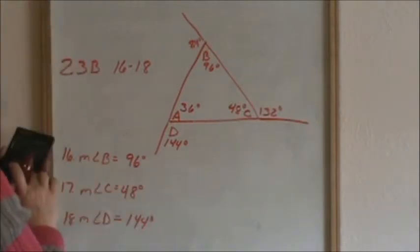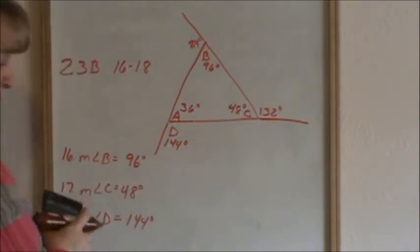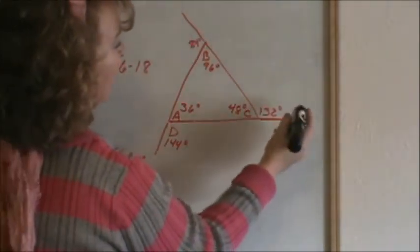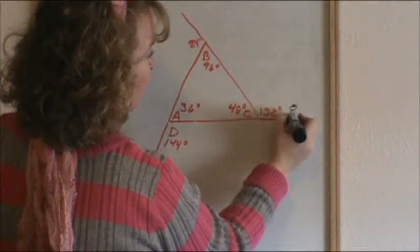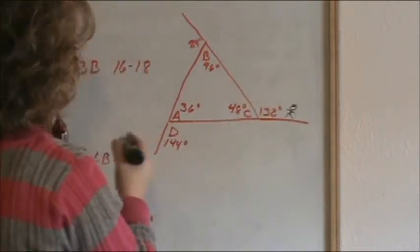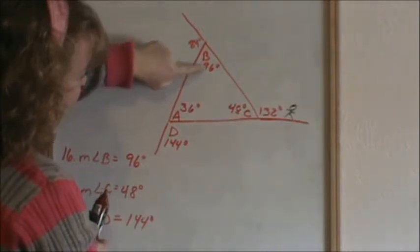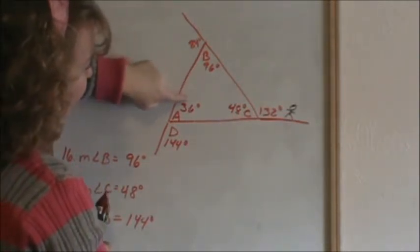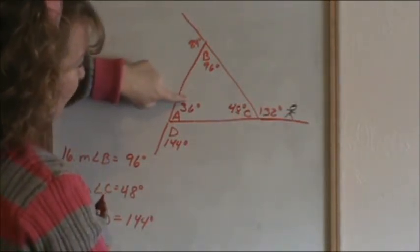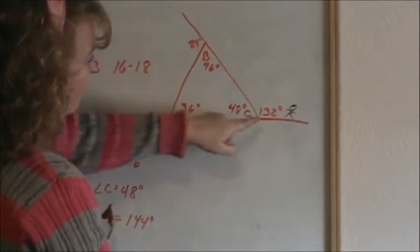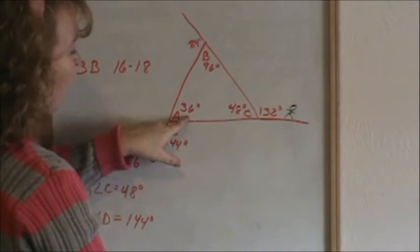All right. Now if we use the rules of what we know about remote interior angles, we can prove this. If I'm standing right here at 132 degrees, from that perspective, these two angles are the remote interior. They are farthest from me, but yet they are inside the triangle. So 96 plus 36 should equal 132, and it does.